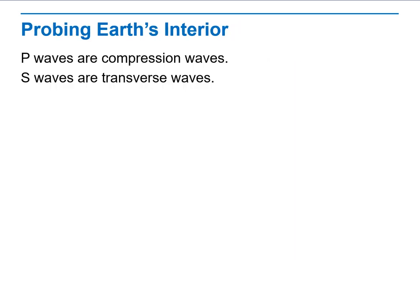Then we will talk about probing Earth's interior. What is the difference between P waves and S waves? P waves are compression waves that travel through all parts of Earth, and S waves are transverse waves that only travel through the rigid layers of Earth.